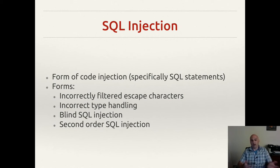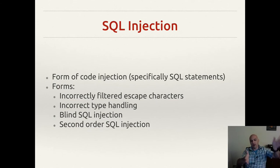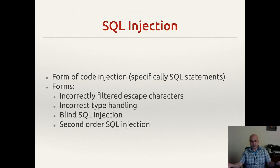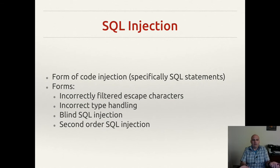You hit enter, and behind the scenes, the form submission goes back to the application server. The application server says they want to search for Brian, creates a SQL statement — SELECT * FROM name WHERE first_name LIKE 'Brian' — and queries the database. The database returns all matching tuples. We do the conversion from SQL tuple to a data object, maybe populating an actual user object with all the user information, and then pass that back to the client to display on screen.